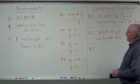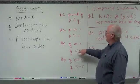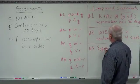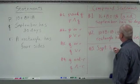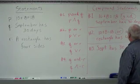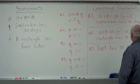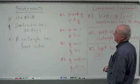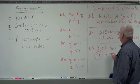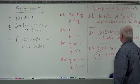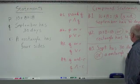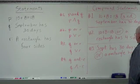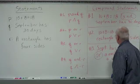Pretty easy. Number three, don't make this any harder than it is. Q or R. What's Q? September has 30 days, or a rectangle has four sides.